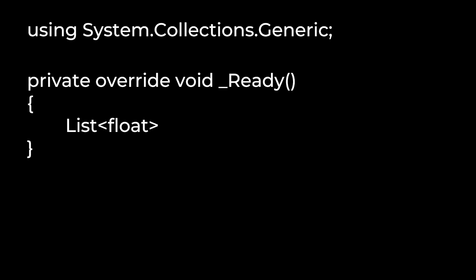What do you suppose comes next? If you were thinking the name, you got it. This is a method-level declaration, so we'll forgo the underscore since it's not a private member variable, but we'll call this one floatList. Now we just type the equals sign, the keyword new, followed by parentheses, and a semicolon. We now have a list of floats that we have not yet initialized.